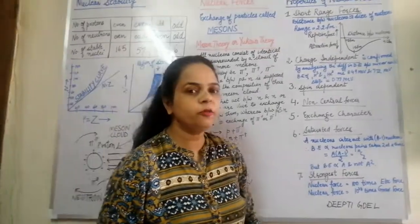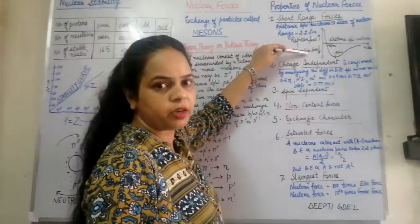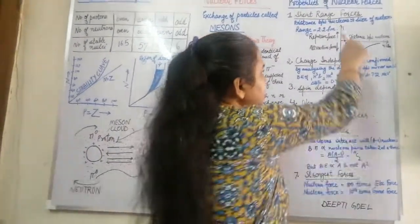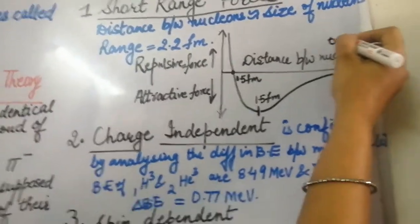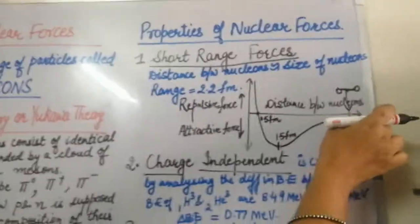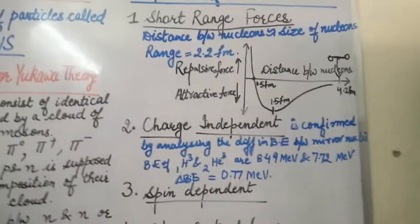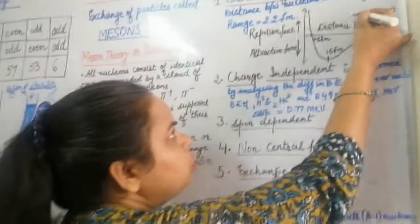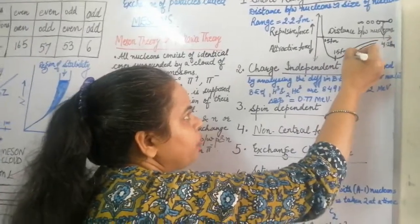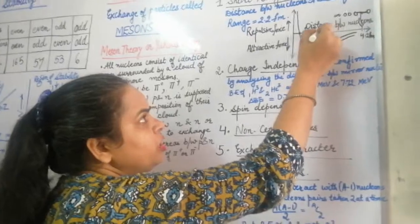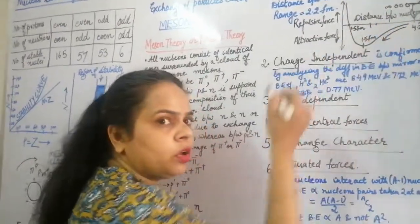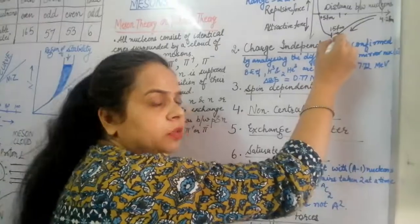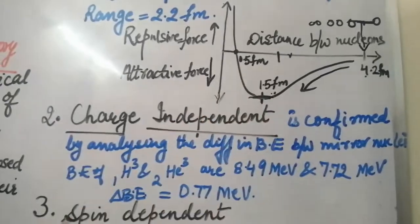A graph was plotted between force (repulsive or attractive) and the distance between the nucleons. When 2 nucleons are separated by 4.2 Fermi, there is no attraction and no repulsion. As the nucleons are brought closer, they start experiencing an attractive force that goes on increasing. At the distance of 1.5 Fermi, the attractive force is maximum.